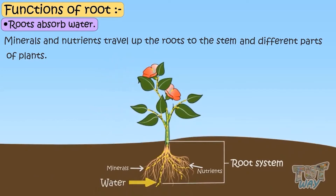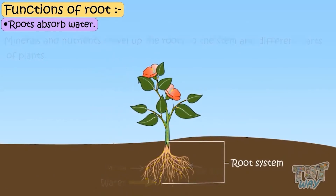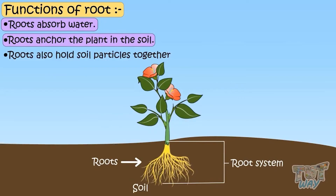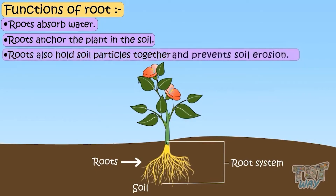Roots anchor the plant — that is, roots fix the plant into the soil. Roots also hold soil particles together, which prevents the soil from being washed away with rain or storm. So roots are the support system of the plant.